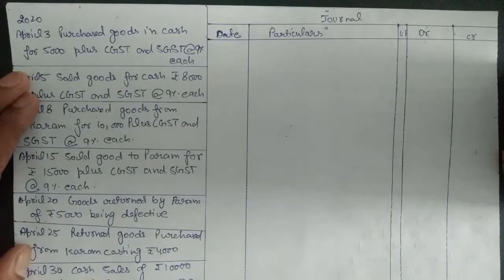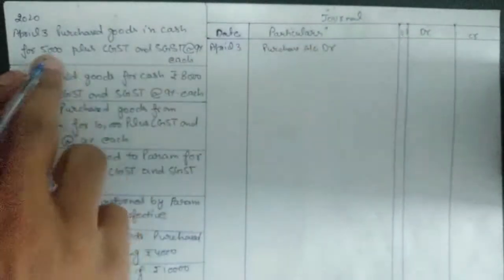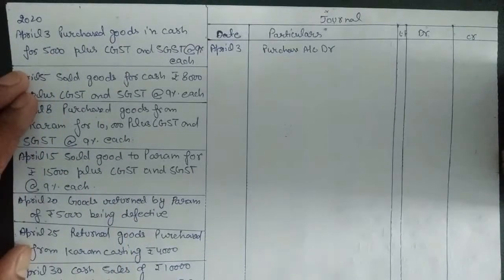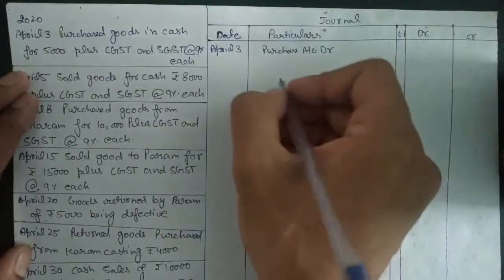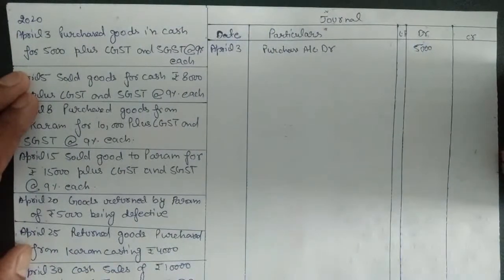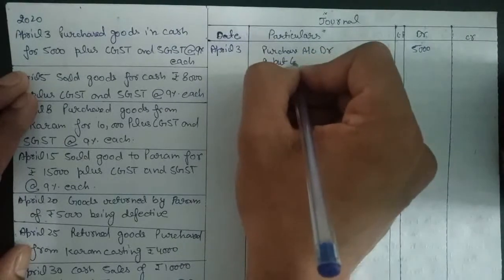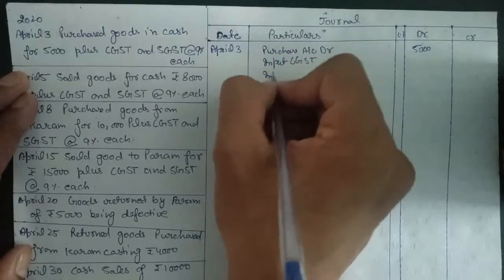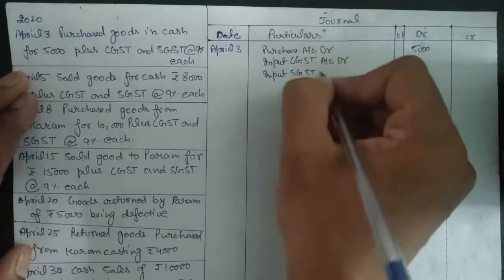To post this entry, we put the date April 3rd. Purchase account is debited — we purchased goods in cash so we use cash purchase account debit for the value of ₹5,000. Then we also paid GST on that, so we debit Input CGST account and Input SGST account, and credit Cash account.